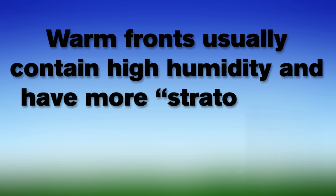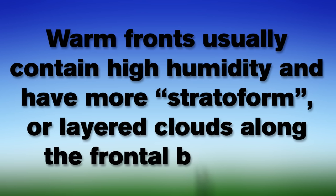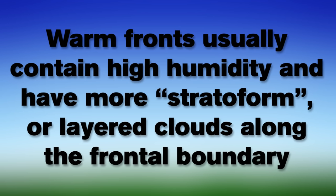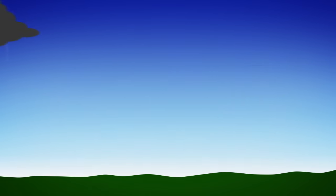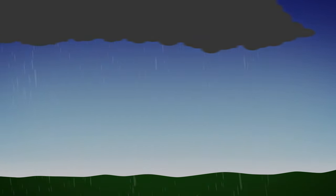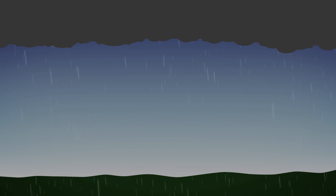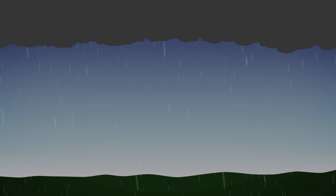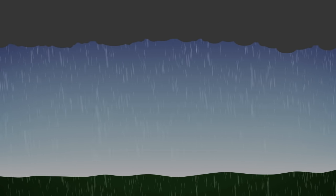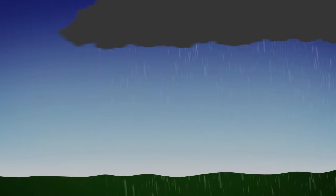Warm fronts usually contain high humidity and have more stratiform or layered clouds along the frontal boundary. Drizzle and decreasing visibility will be present as temperatures rise. Once the front passes, rain showers are possible, followed by a gradual clearing.